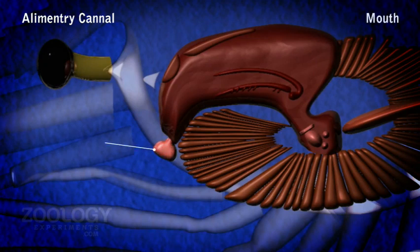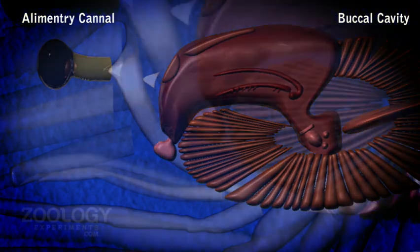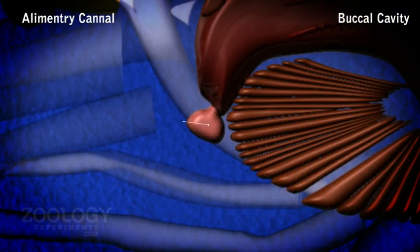The mouth is a large slit-like aperture lying midventrally below the anterior end of the head. It is bounded in front by the fleshy labrum, laterally by the plate-like incisor processes of mandibles, and behind by the bi-lobed labium. The mouth leads into the buccal cavity.